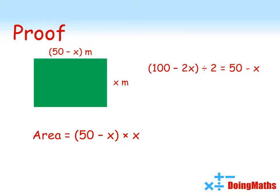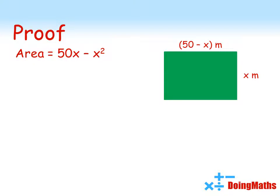So, the area of this will be 50 minus x, times by x, giving us 50x minus x squared. So, we've got an algebraic expression for the area, 50x minus x squared.